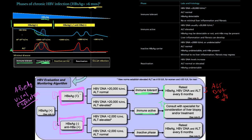What is our goal when treating someone who is E antigen positive? First, we want to get them out of the active phase so there's not a lot of ongoing inflammation. We're hoping that through treatment, we can convert them from E antigen positive to E antigen negative — changing them from the category with more active viral replication to the one with less. That's a good goal: getting them into the second category.